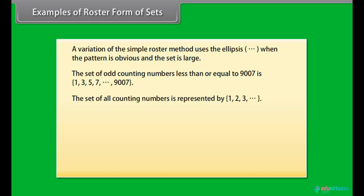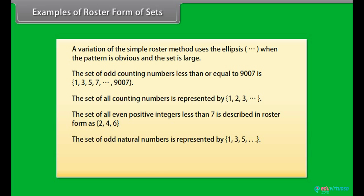Set of all counting numbers is represented by 1, 2, 3 and so on. The set of all even positive integers less than 7 is described in the roster form as 2, 4, 6.